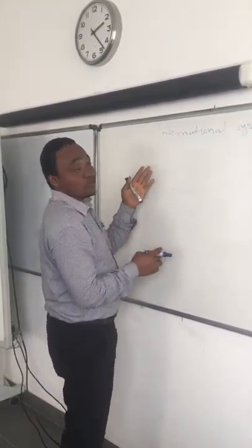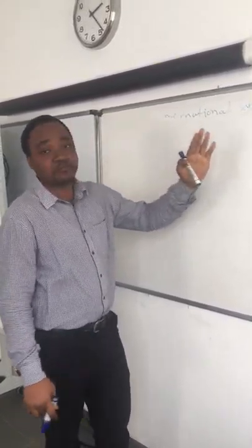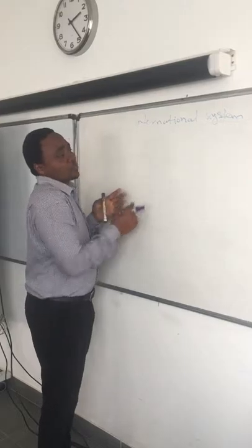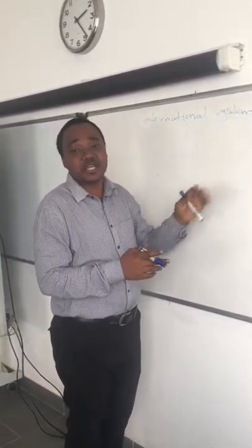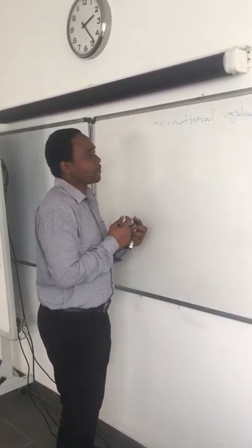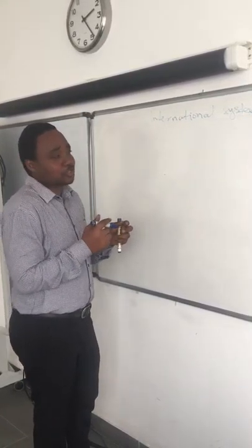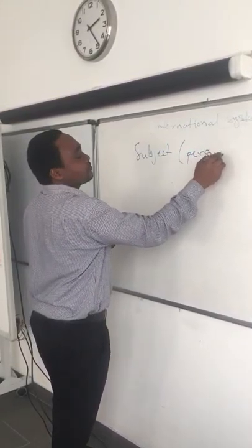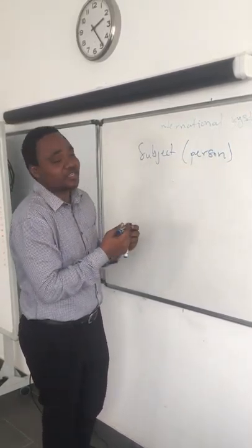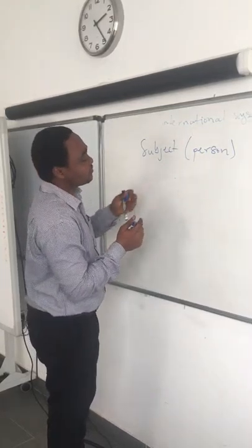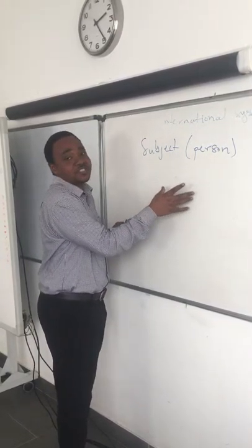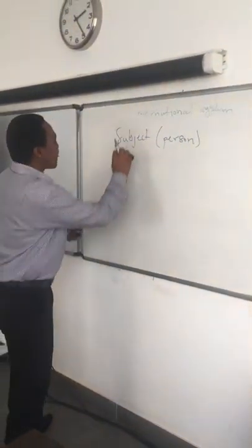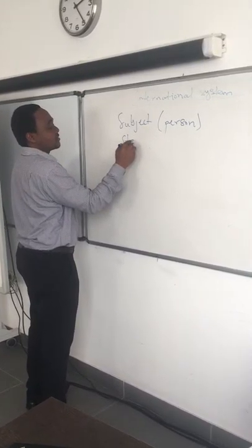We have learned how states behave within the international system. Now we are going to continue with considering states as a subject of international law. When we talk of 'subject,' we are considering a person — so states as a person means that the state will be considered as a legal entity.